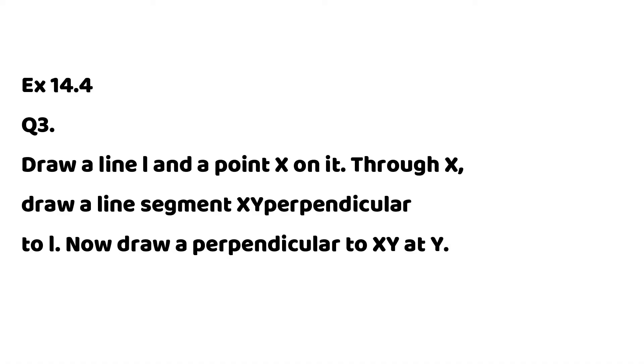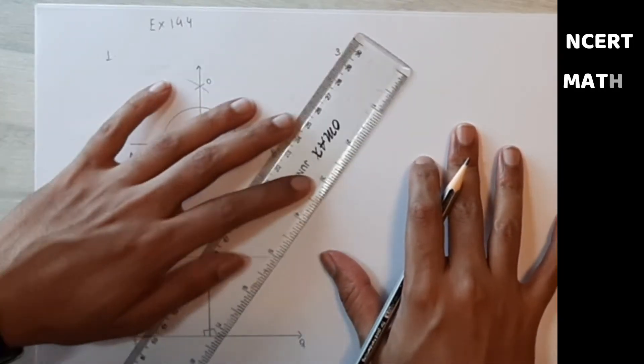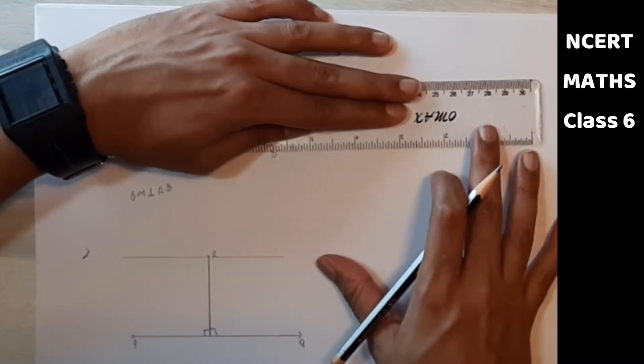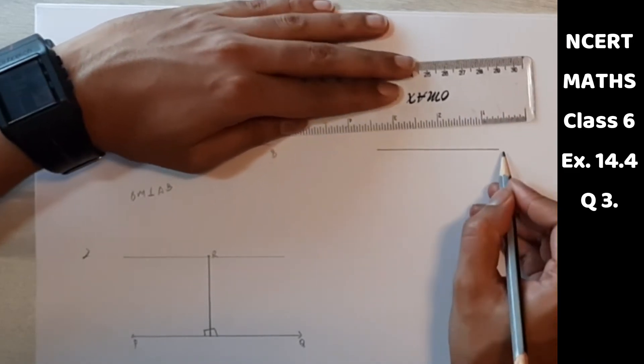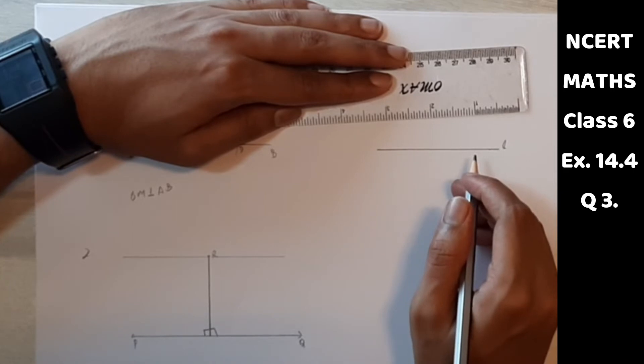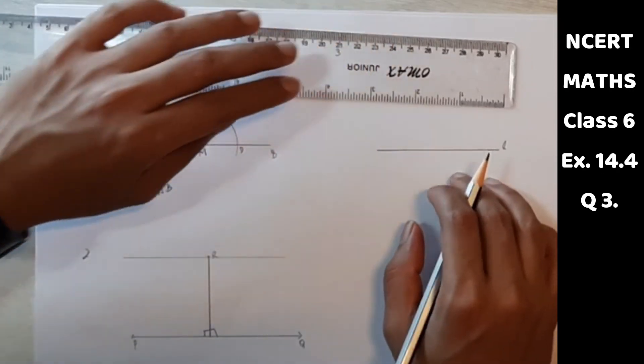Draw a line L and a point X on it. Through X draw a line segment XY perpendicular to L. Now draw perpendicular to XY. So this is L. Now we have to draw a line segment XY perpendicular to L.